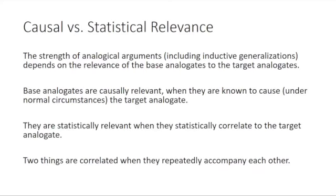An easy way to distinguish between these two things is to use the example of Pavlov's dog. Pavlov took a dog and every time he was going to feed the dog, he rang a bell before he brought the food. He did that repeatedly until, when he rang the bell without bringing the food, he measured the amount of salivation from the dog's mouth and found the dog salivated — so he said he had conditioned the dog to expect food after the bell rings.